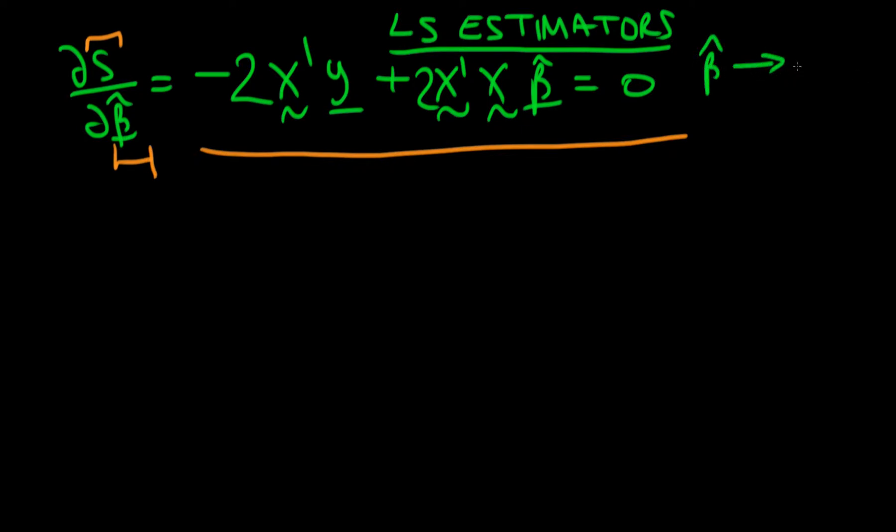Remember that beta hat is our least squared estimate or least squared estimator for the population parameter vector beta. This isn't purely a bivariate case; this generalizes to any number of independent variables and corresponding coefficients in the population, and we got this thing up here above.